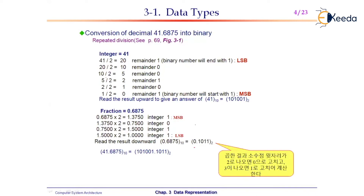Continue dividing until no further subdivision is possible. Collecting remainders 1, 0, 1, 0, 0, 1 and arranging in inverse order gives the binary equivalent of the decimal number. This is how a number is converted from decimal to binary.